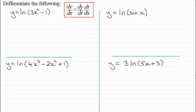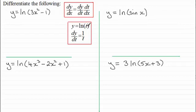We should know that if y equals the natural log of t, then dy/dt would be 1 over t. This is a standard result — as I showed you previously, when y equals the natural log of x, dy/dx is 1 over x.